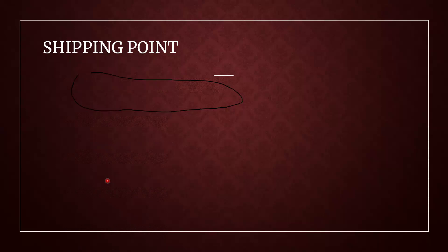They have asked: what is Shipping Point? It is a place where goods are shipped to or delivered to the customer. Goods issue will be done from the Shipping Point. This is the expected answer — goods are shipped to the customer from the Shipping Point. These are the basic questions asked in Part 1.